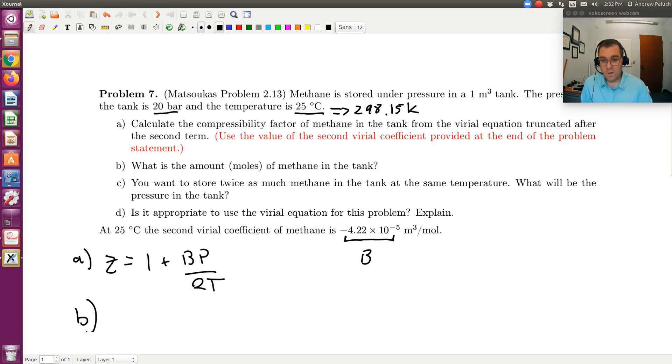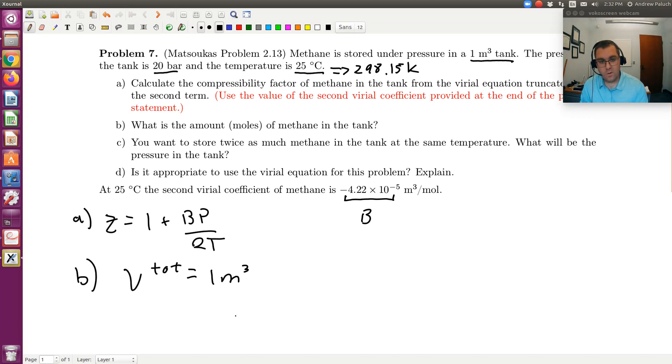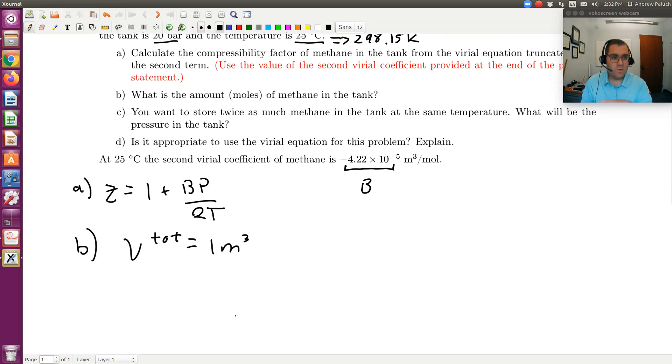Then B asks, what is the amount of moles of methane in the tank? Well, if I look at the problem statement, we're given the total volume. So we're told the V total is equal to 1 meter cubed. So since I'm asked to solve for the number of moles, what I immediately think of is, well, if I know the molar volume, my intensive volume, and I know the extensive volume, I can use that to solve for the moles.